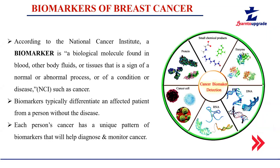How do we detect cancer? There is a term called biomarker. Biomarkers are biological molecules produced within a cancer cell that help us detect whether it's a cancerous or normal cell. These biomolecules include proteins, enzymes, DNA, RNA, and cancer cells themselves — they act as markers to detect breast cancer.